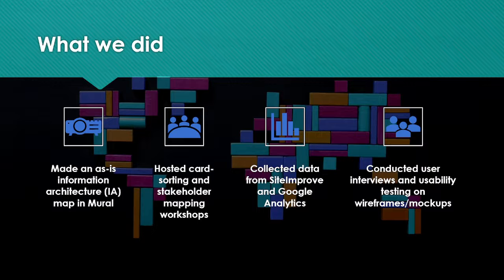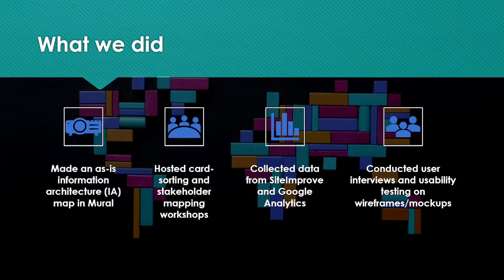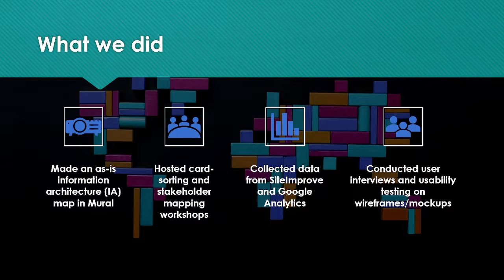In phase one of this project — design and discovery — my team and I started by making an as-is information architecture map in Mural (M-U-R-A-L). We went in and looked at their information architecture along with what we wanted it to look like moving forward. We made both an as-is IA map showing how their website is currently organized, along with a to-be IA map created in collaboration with our stakeholders.